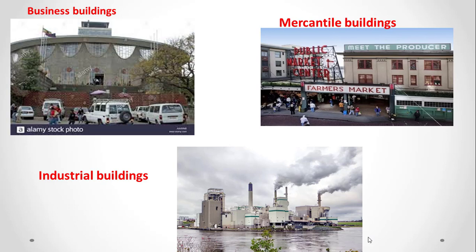We also have merchandise buildings, which are used as shops, stores, and markets — as shown in the picture, these are places for shopping and marketing. We also have industrial buildings, which are used for fabrication, assembling, or processing finished materials.